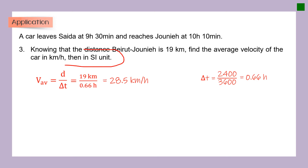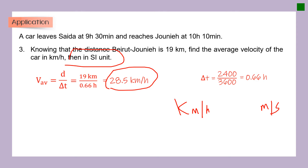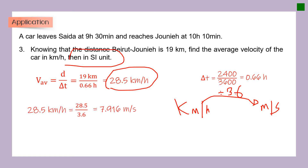Now converting to SI units — to convert from kilometers per hour to meters per second, I divide by 3.6. So 28.5 divided by 3.6 gives 7.916 meters per second.